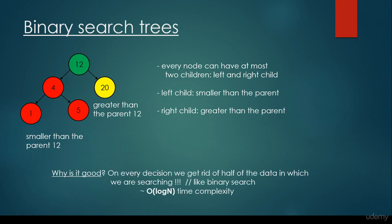You may ask: why is this good? We have been talking about arrays and linked lists — they are going to solve our problem, so why bother about binary search trees? Because in every decision we get rid of half of the data in which we are searching, and that's why the time complexity is going to be very favorable for binary search trees. It is very similar to binary search — we can get rid of half the data on every iteration, and that's why the time complexity will be O(log n).